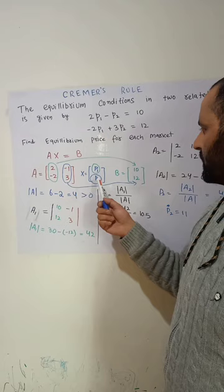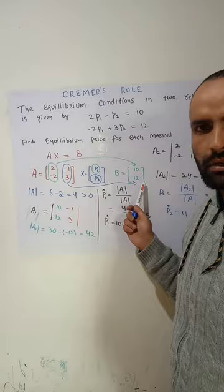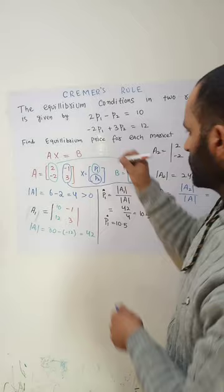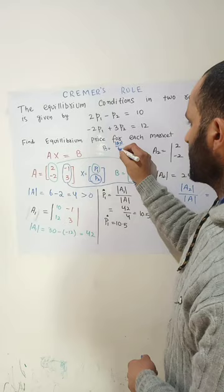To find the value of p2, we replace the second column of the coefficient matrix with the vector of constant terms and form a new matrix A2. Then p2 is equal to the determinant of A2 divided by the determinant of the coefficient matrix, and we get a result of 11.